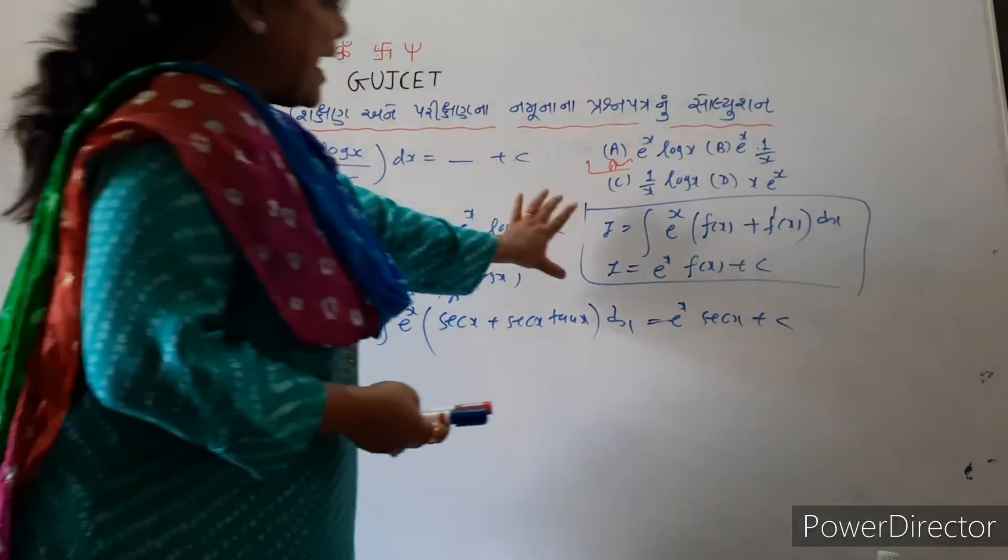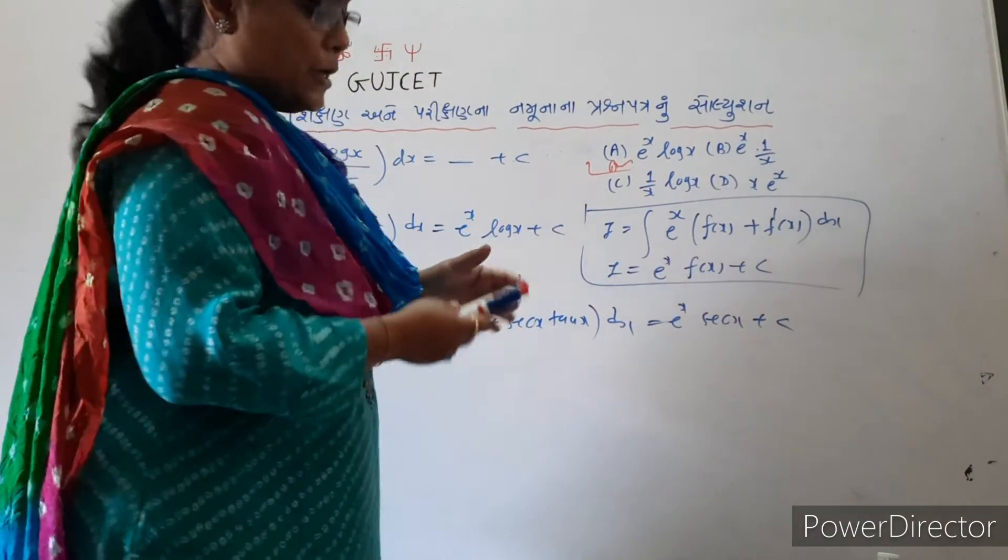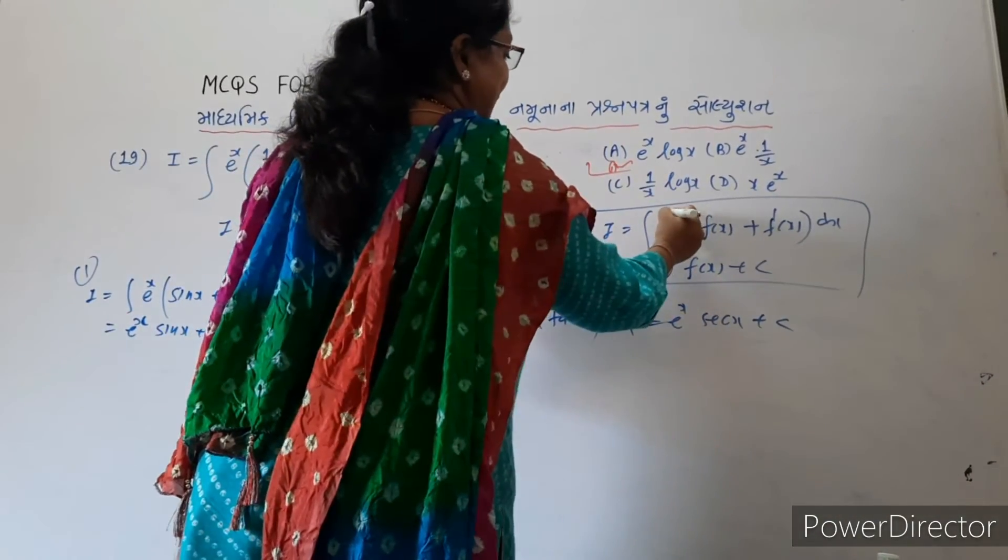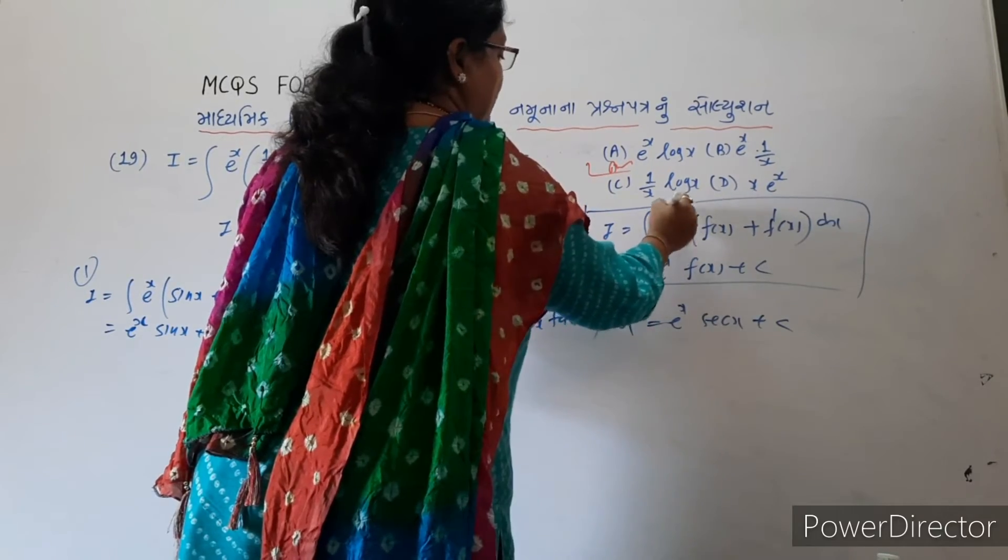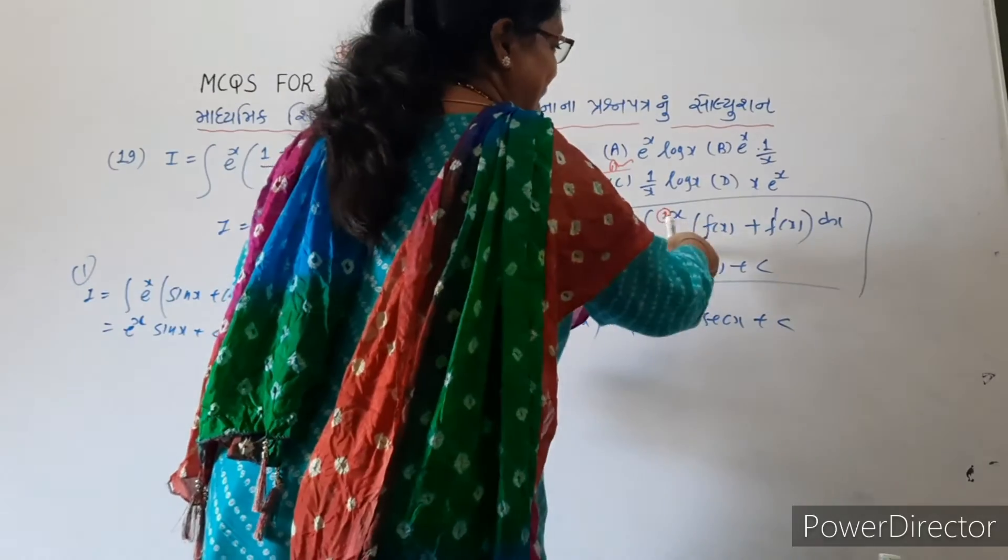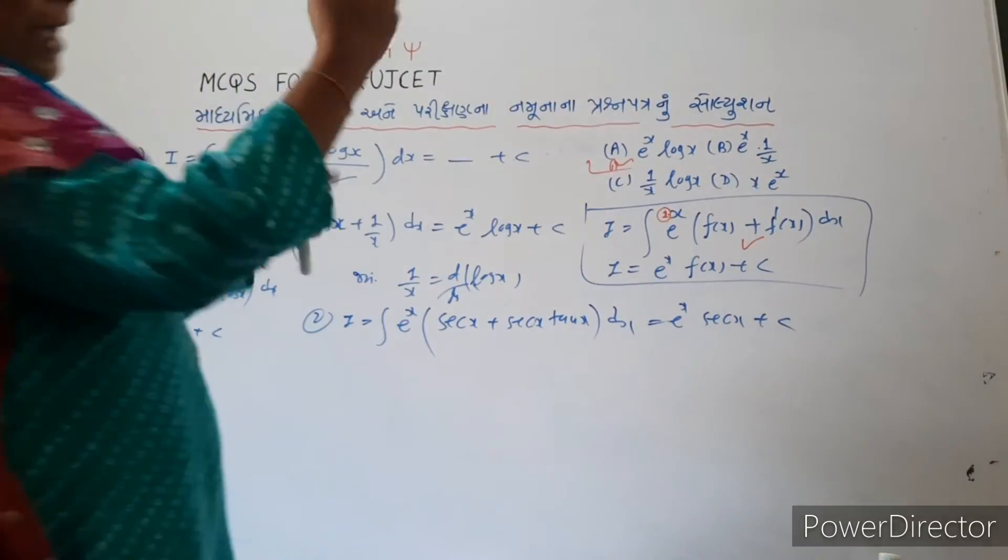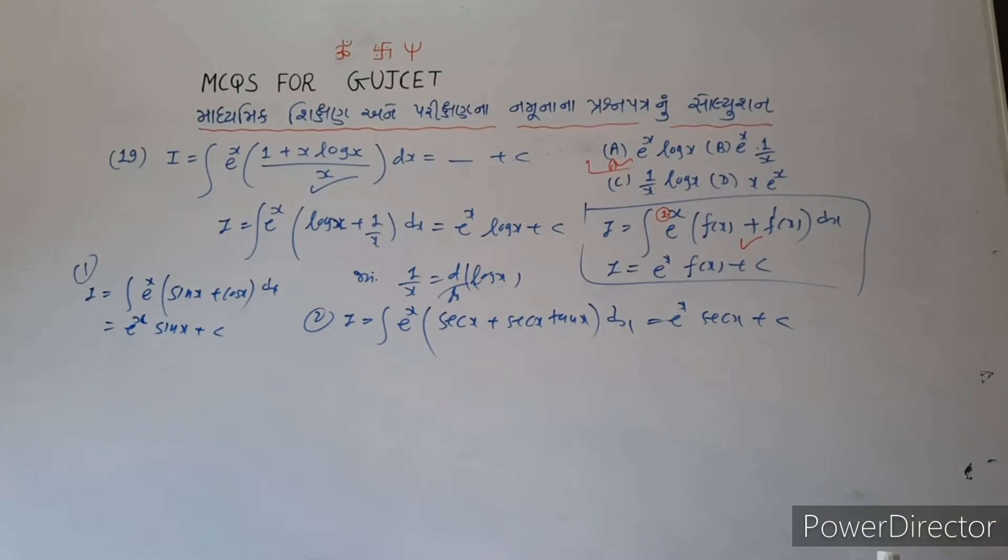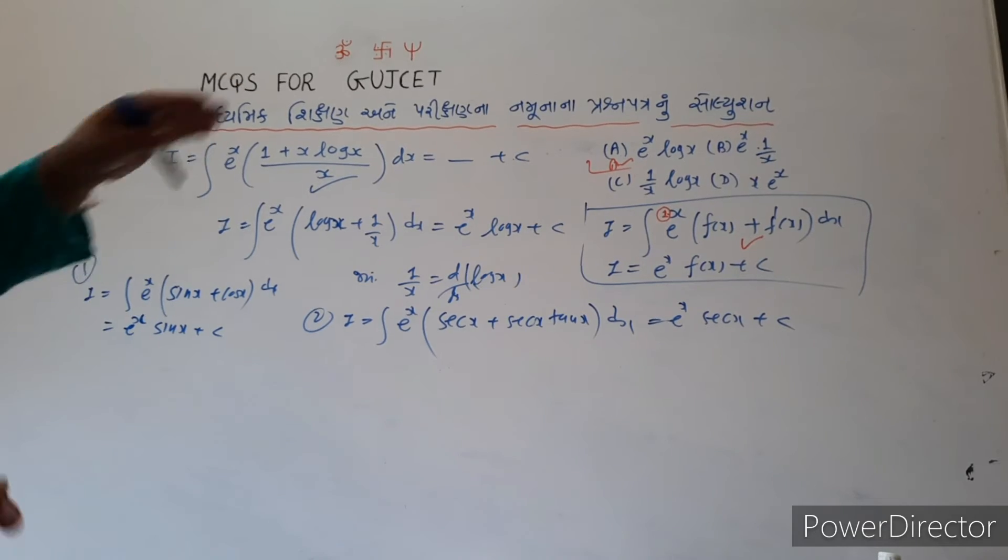First, I have another one which is different. So I is equal to integration. Here we have bracket f of x plus f dash x bracket dx.